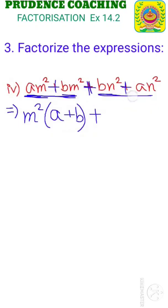Write the separator as it is. Next 2 terms if we see, we will see here n² is common. So take n² common. You will be left with b plus a.